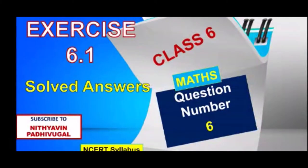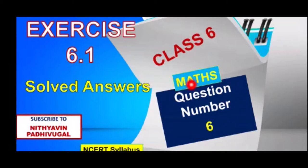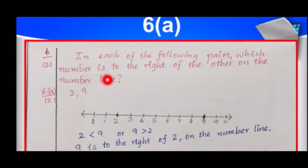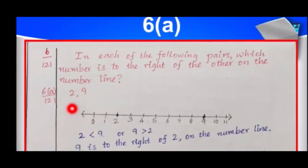Welcome to Nithya Abhin Padivughal. Class 6, Exercise 6.1, Question Number 6. It has many subdivisions. Let us see all subdivisions with solutions. In each of the following pairs, which number is to the right of the other on the number line? Come, let us see what is the first pair of numbers. 6A from page number 121.